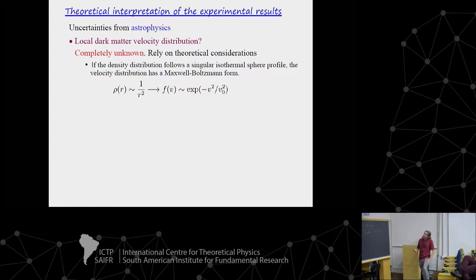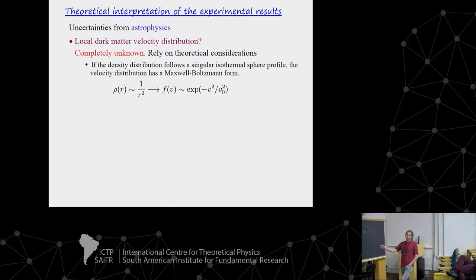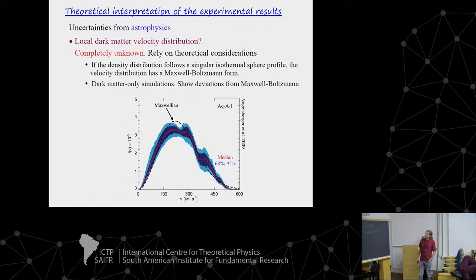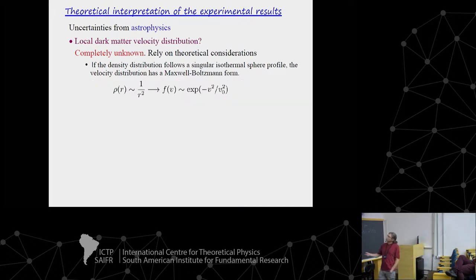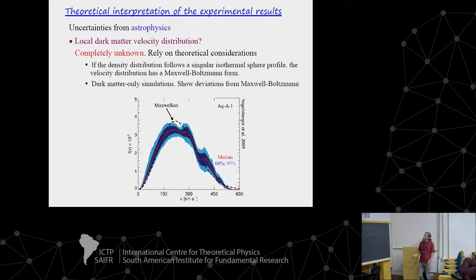The second and third uncertainties concern the local dark matter velocity distribution, which is completely unknown, so one must rely on theoretical considerations. It is known that if the density distribution follows a singular isothermal sphere profile, then automatically the velocity distribution will have the Maxwell-Boltzmann form — which is commonly assumed. But we know the density does not follow this profile, and from N-body simulations the distribution is closer to NFW or Einasto, so we expect deviations from Maxwell-Boltzmann.